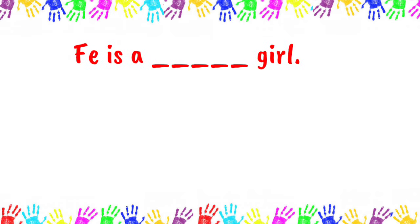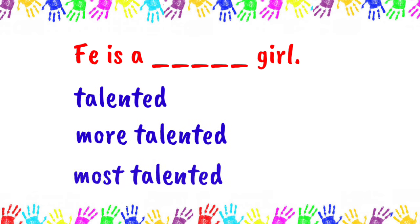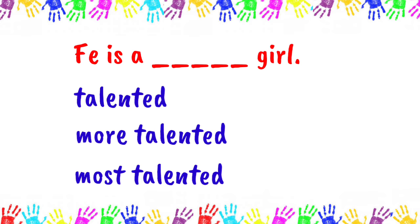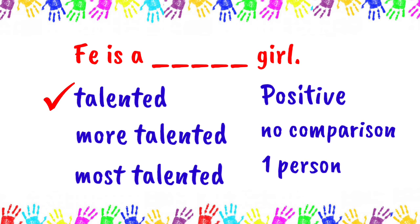Next: 'Fe is a ___ girl.' Talented, more talented, or most talented? The answer is 'talented' — positive degree — because there is no comparison made in this sentence. We are only describing one person, and that is Fe.